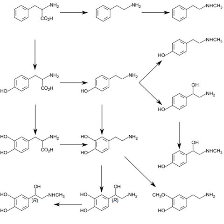A catecholamine is a monoamine neurotransmitter, an organic compound that has a catechol benzene with two hydroxyl side groups at carbons 1 and 2 and a side chain amine. Catechol can be either a free molecule or a substituent of a larger molecule, where it represents a 1,2-dihydroxybenzene group.